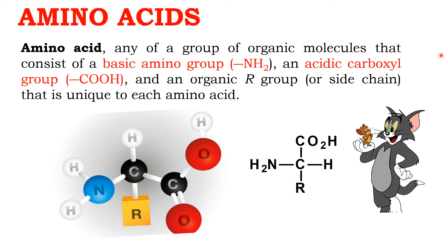In any organic compound, if it contains a COOH group — that is a carboxylic group — it is called an organic acid. For example, CH3COOH is acetic acid, and it is an organic acid.